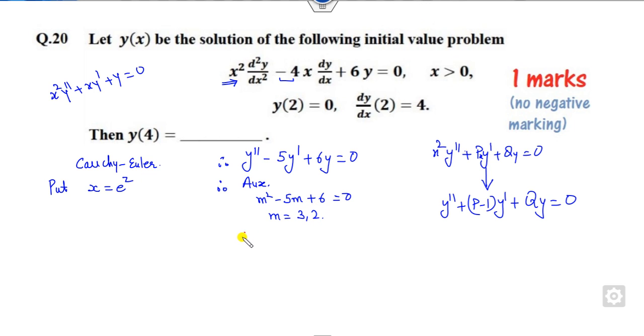Once you get this, what is the equation? This is c₁e^(3z) + c₂e^(2z), or you can write this as c₁x³ + c₂x².